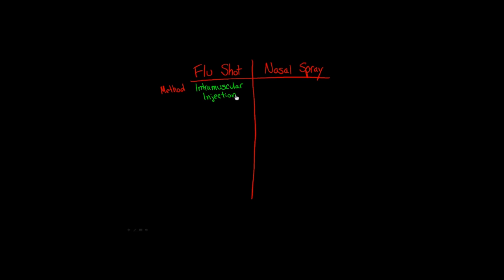However, the flu shot can also be given in the gluteus maximus, although in these modules we only teach the deltoid method. The flu shot can also be given as an intradermal injection, but again we're only teaching the intramuscular injection in the deltoid. The nasal spray is obviously sprayed in the nose. That's the most obvious difference between the flu shot and the nasal spray.